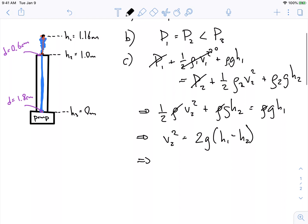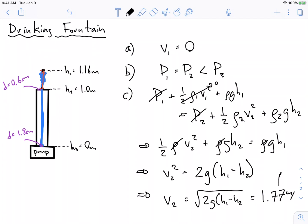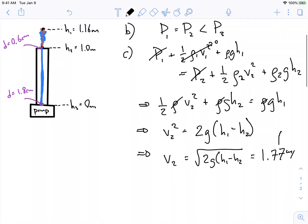And then v₂ is equal to the square root of this, which I get to be 1.77 meters per second.